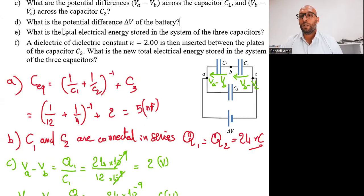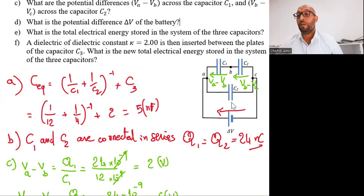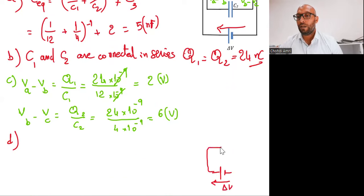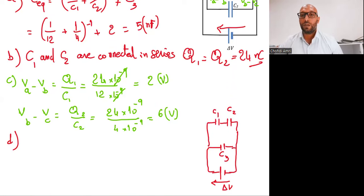Question D: what is the potential difference delta V of the battery? The battery is connected in parallel with C3, and also connected in parallel with the combination of C1 and C2. We can draw our circuit accordingly. Delta V is in parallel with C3, which is in turn connected in parallel with the combination C1 and C2. So if we know delta V across capacitor C2...